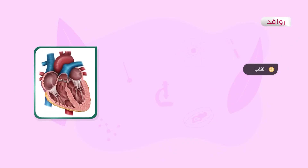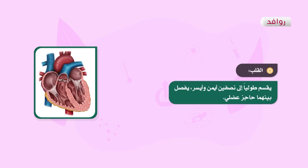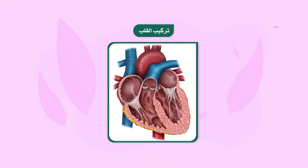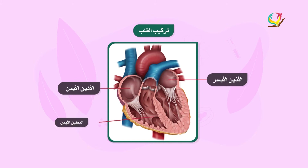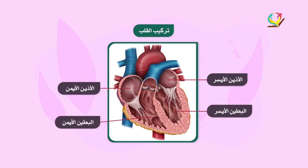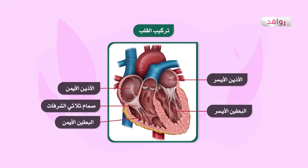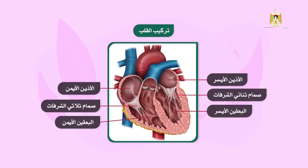يقسم القلب طولياً إلى نصفين أيمن وأيسر وبينهما حاجز عضلي. ويتألف القلب من أربع حجرات هي الأذين الأيمن والأذين الأيسر والبطين الأيمن والبطين الأيسر. يفصل بين الأذين الأيمن والبطين الأيمن صمام ثلاثي الشرفات، بينما يفصل بين الأذين الأيسر والبطين الأيسر صمام ثنائي الشرفات.